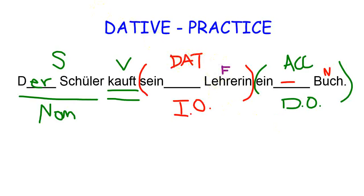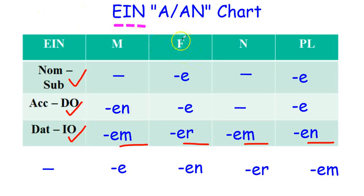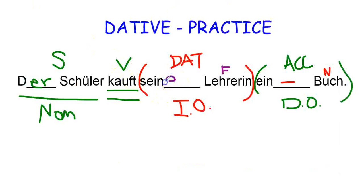So we want feminine, dative. And if we look at a chart, until you get used to it, feminine, dative is E-R. So, der Schüler kauft seiner Lehrerin ein Buch.